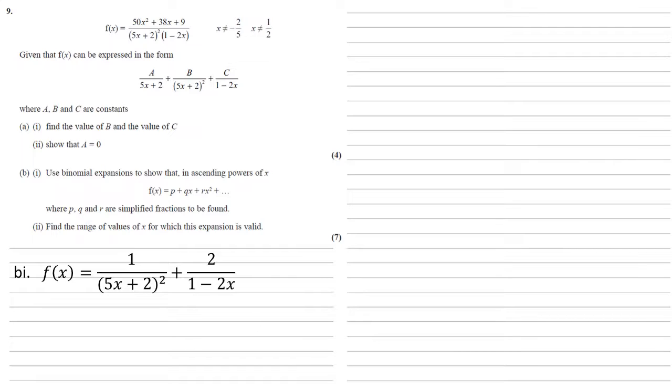If we put this into index form, we know that the first bit is going to be 5x plus 2 to the minus 2. To use our binomial expansion on this, we're going to get it so that instead of having a 2 in the bracket, it's going to be a 1. So this is equal to 2 to the power of minus 2 times by 5 over 2x plus 1 to the power of minus 2, and we're going to expand that bracket.